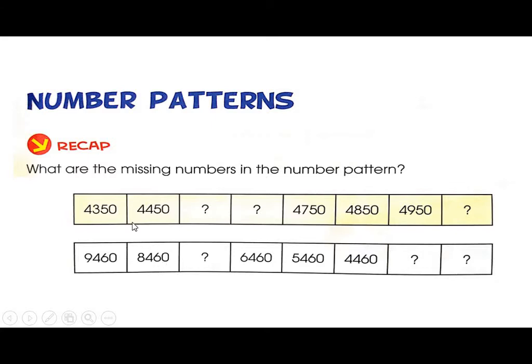This type of number pattern changes by the place value. Look at which place value is changing. This number is in the ones place, this is in tens, this is in hundreds, this is in thousands. For the second pattern, 9,000, 8,000. This number is decreasing, getting smaller towards smaller.